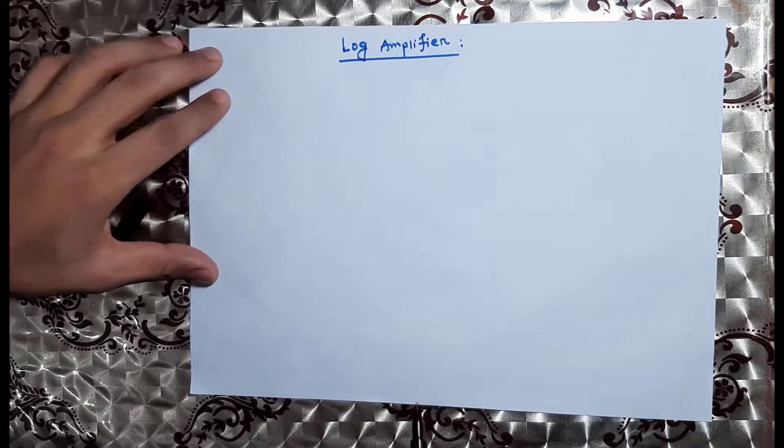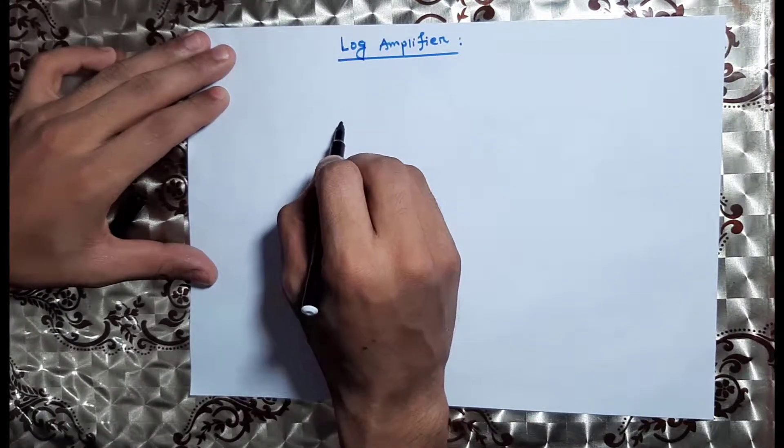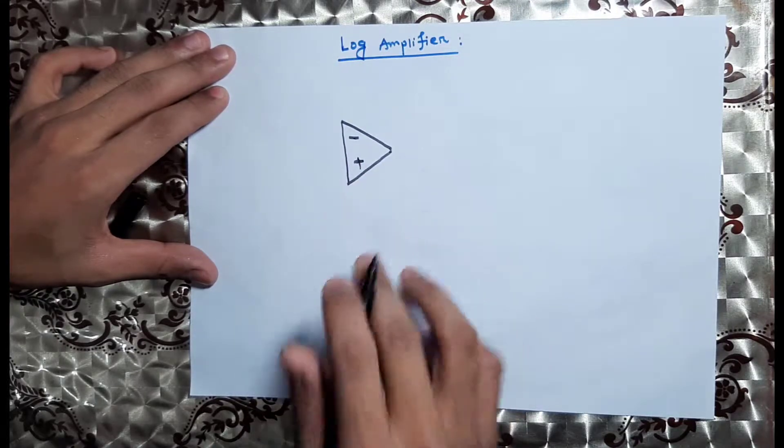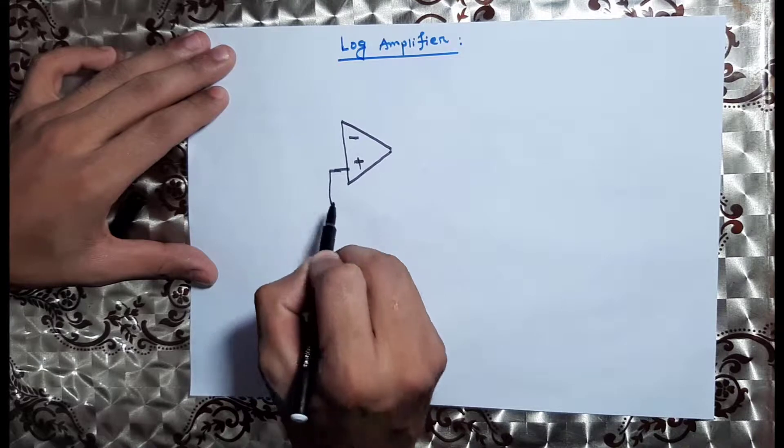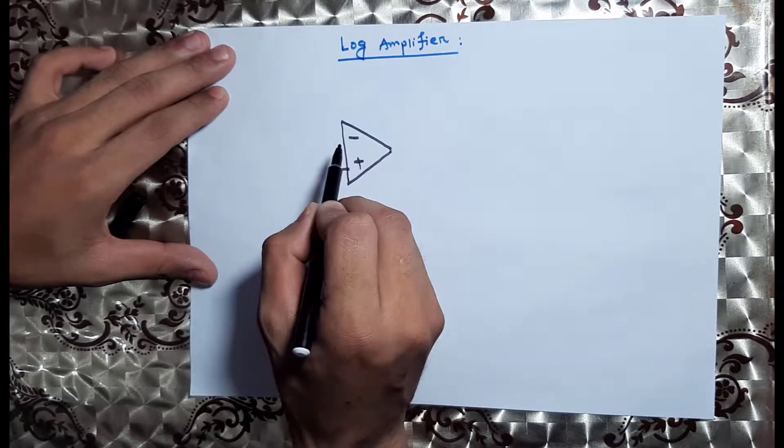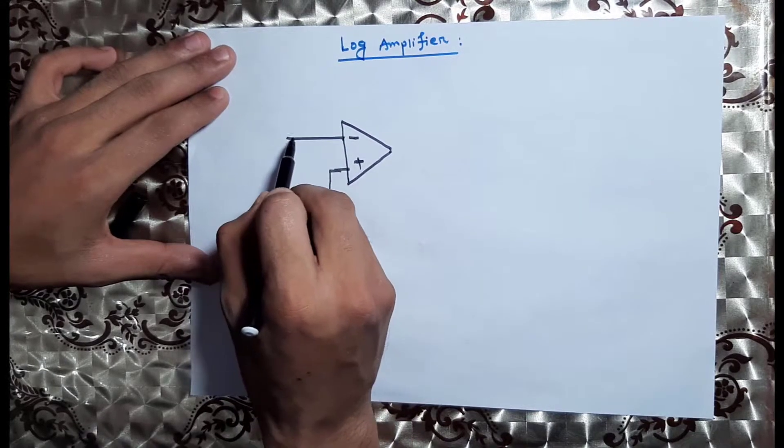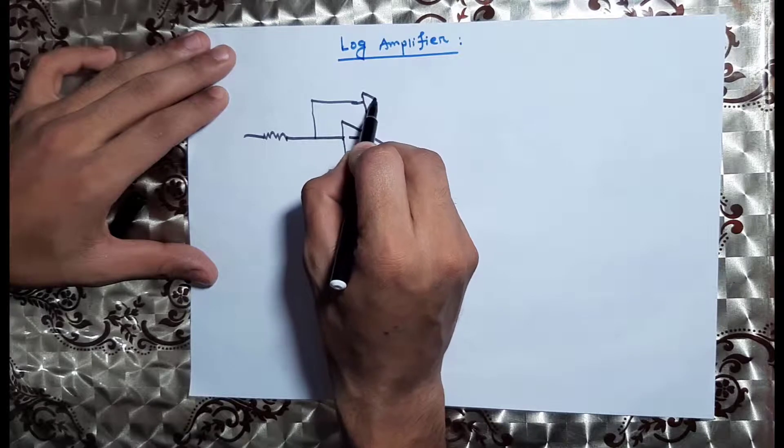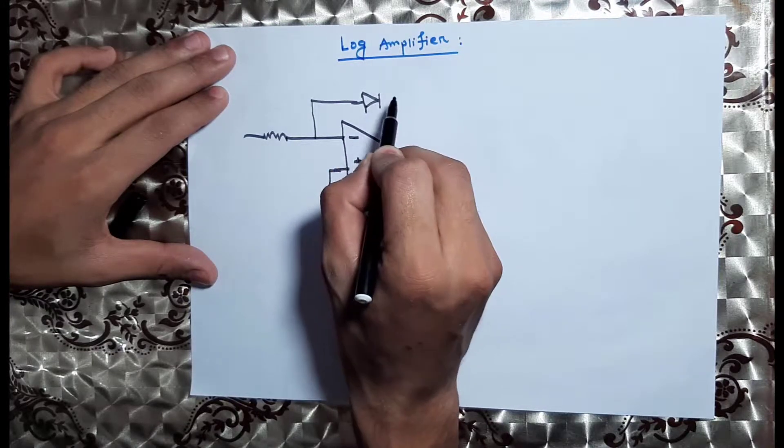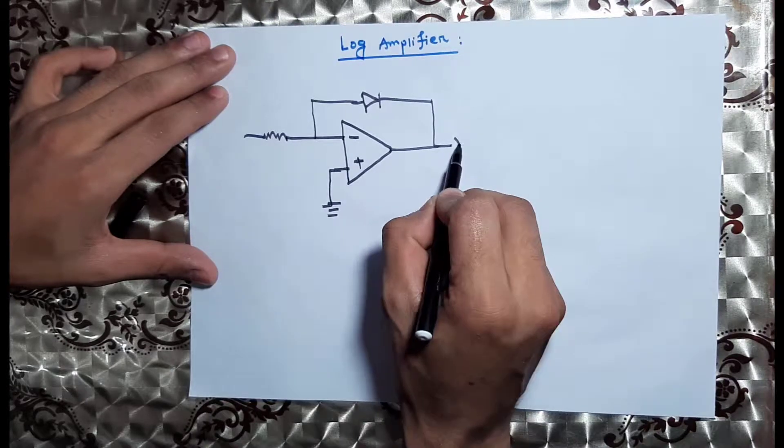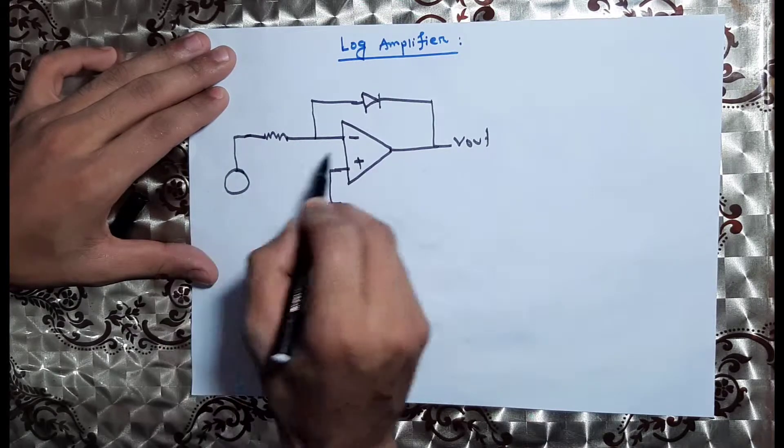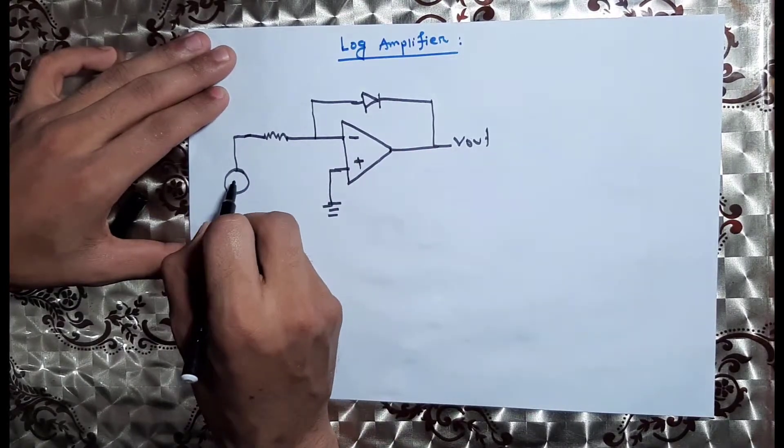We can see the anti-log in the same way. We can draw the circuit using negative feedback. We use the negative feedback on the diode. We apply the input signal to the inverting terminal.